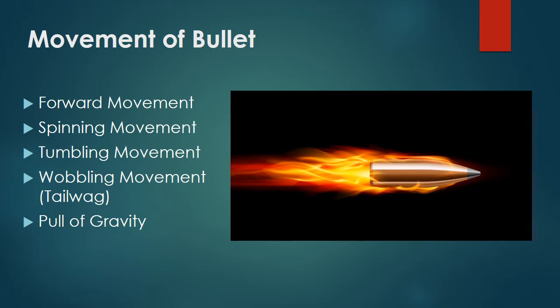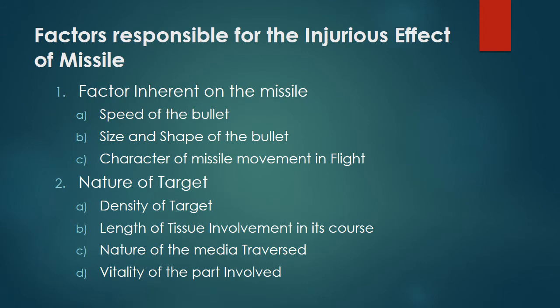Movement of the bullet: forward movement, spinning movement, tumbling movement, wobbling movement or tail wag, and pull of gravity. Factors responsible for the injurious effect of the missile — inherent to the missile: speed of the bullet, size and shape of the bullet, and character of missile movement in flight. Nature of target factors: density of target, length of tissue involvement in its course, nature of the media traversed, and vitality of the part involved.